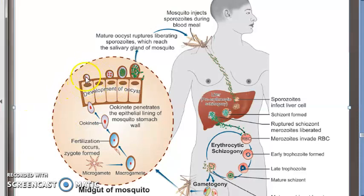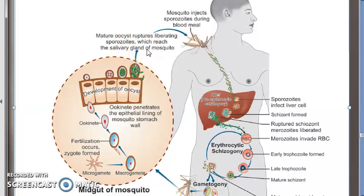Beneath the basement membrane it becomes an oocyst — a round sphere with an elastic membrane. Within it, many sporozoites are formed. The mature oocyst ruptures, releasing the sporozoites. These sporozoites somehow reach the salivary glands of the mosquito, which is now in the infective stage. When it feeds on humans, the sporozoites are injected into the skin capillaries and human infection is initiated.